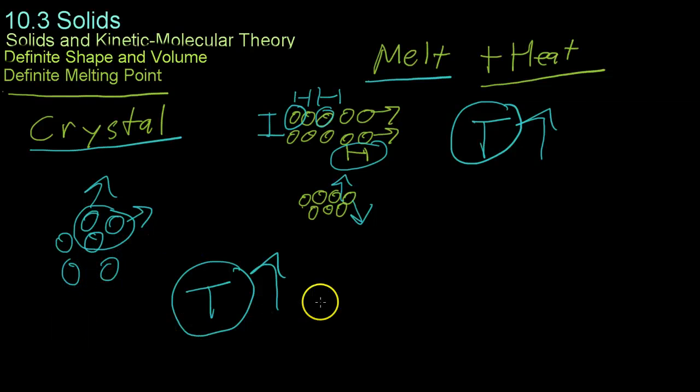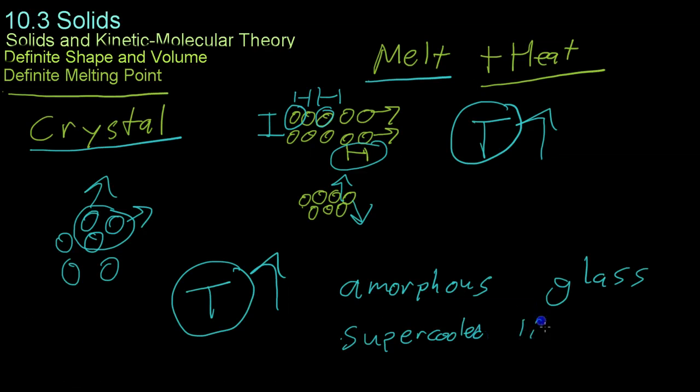And this is why amorphous solids, like glass, are sometimes called supercooled liquids. That is, they exert some properties of liquids like random position, and once you add enough temperature, eventually flow in some parts.